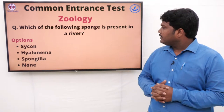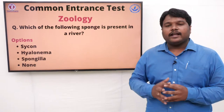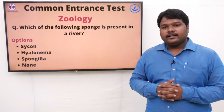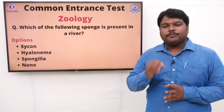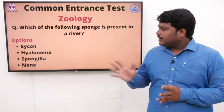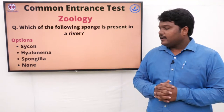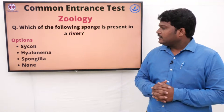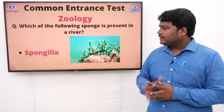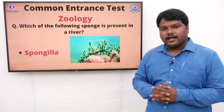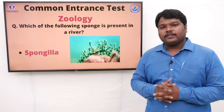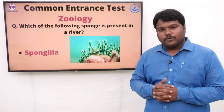Question 3: Which of the following sponges is present in a river? We are having different types of sponges in our study, but they are asking which type of sponge is present in a river. Options: A) Sycon, B) Hyalonema, C) Spongilla, D) None. The answer is Spongilla. Spongilla is the type of sponge present in the river — they are dependent upon the water.